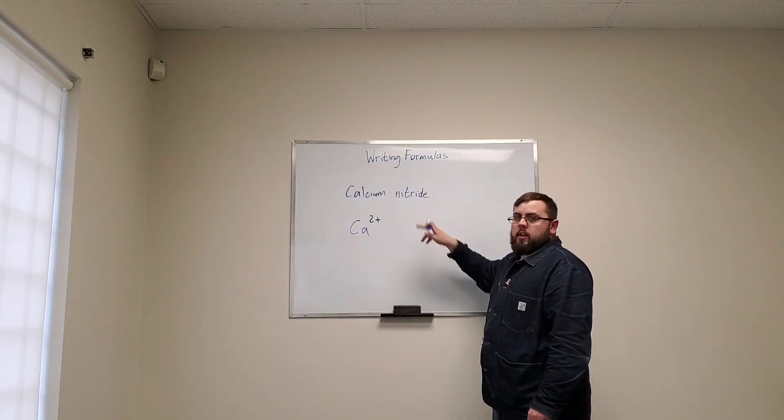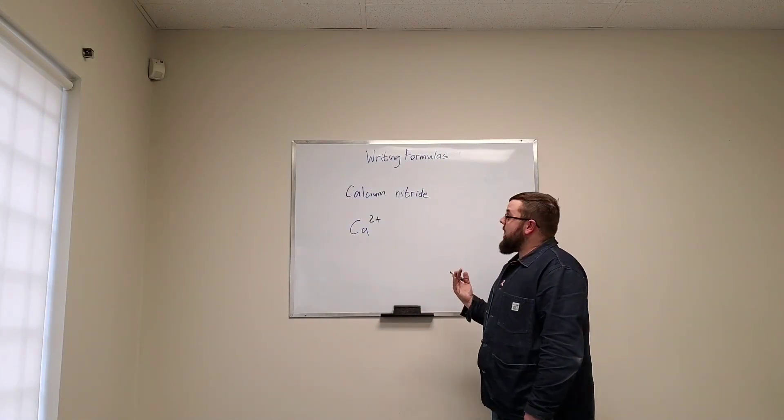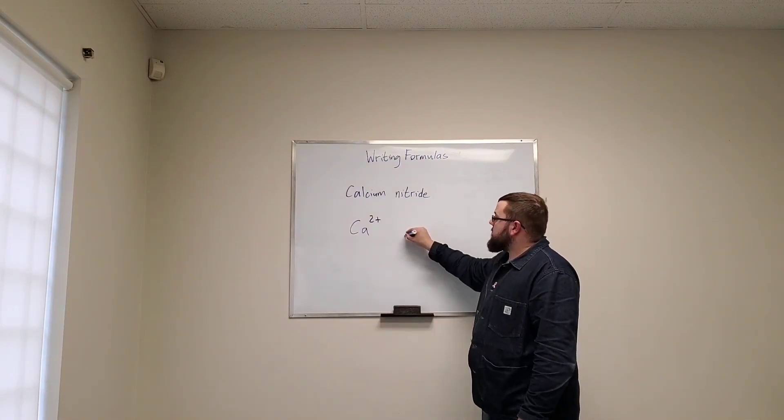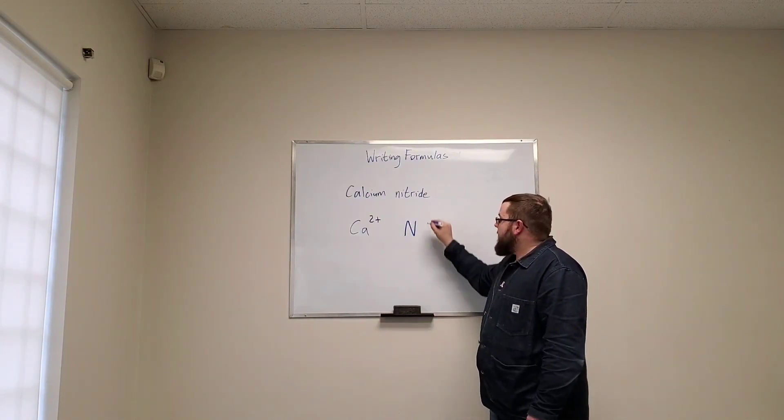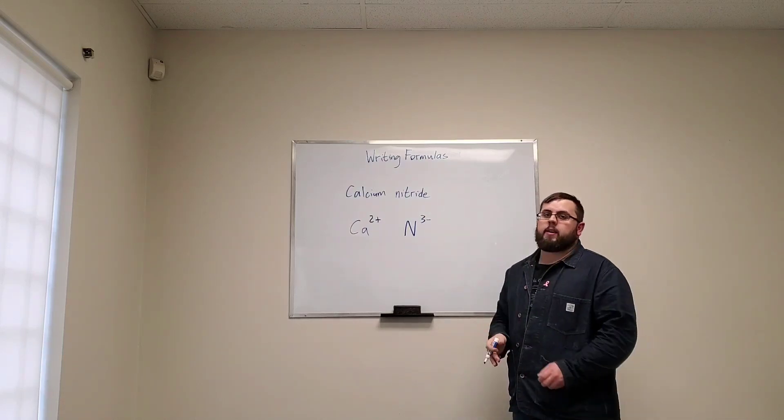Now when we look at nitride, which element is that? That is nitrogen. So we're going to look at nitrogen on our periodic table and it has a charge of 3 minus.